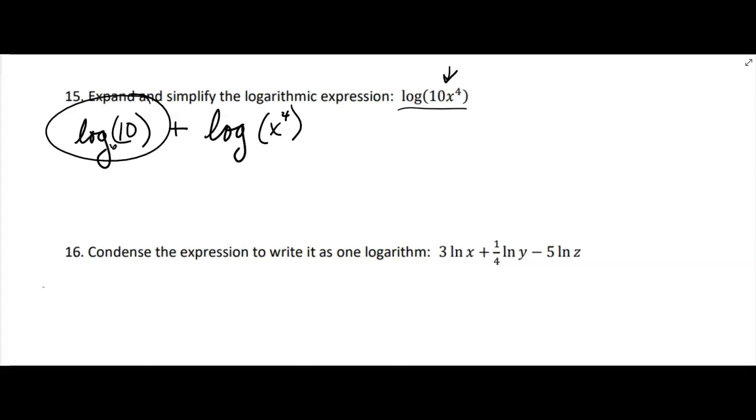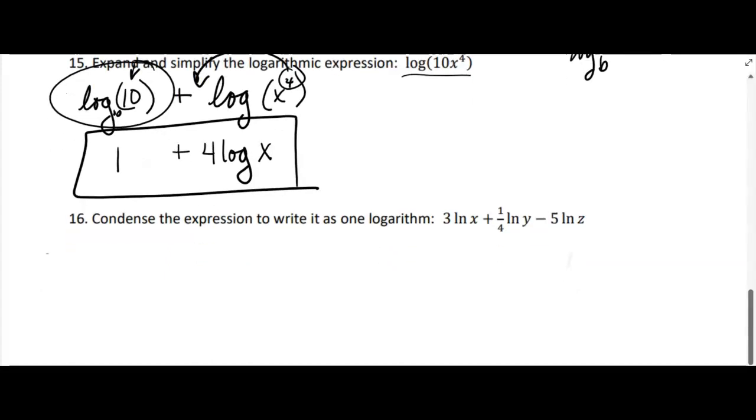Now two things to simplify. First, the base is the same, it's like a little 10 here we don't write when it's a common log, but when the base is the same as the argument, this is called the argument, then it just equals 1. That's one of our basic properties: log base b of b equals 1. When we have an exponent here we can bring that down in front, that's the power property. So you're going to have 4 log x. So that's how it simplifies - we've expanded it and we've simplified it.